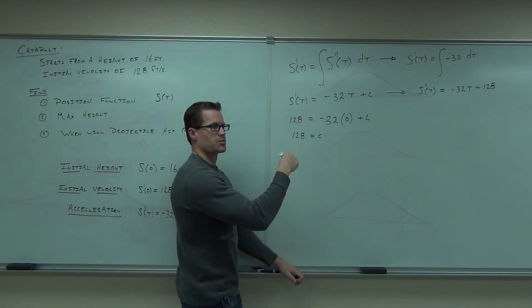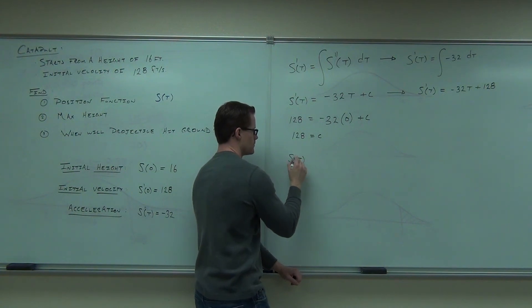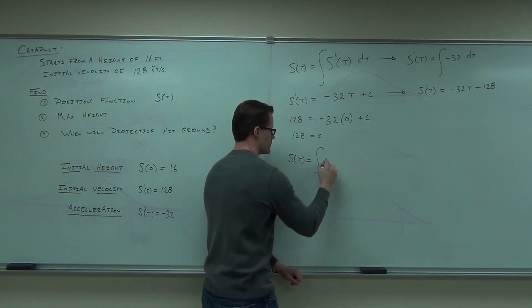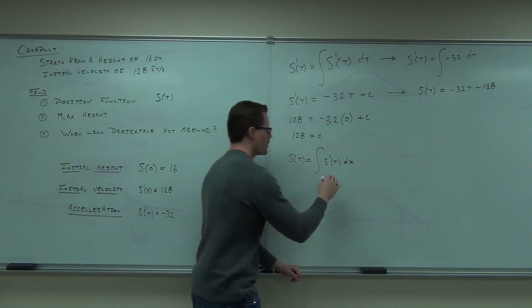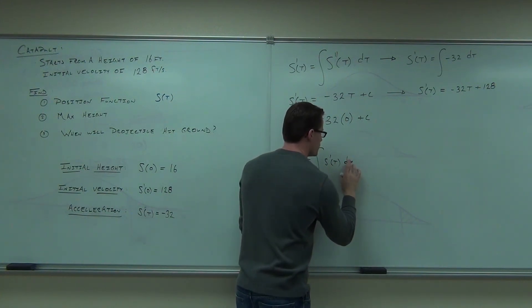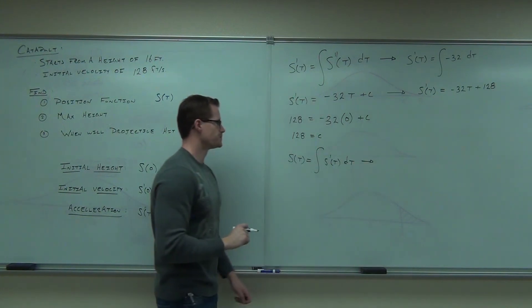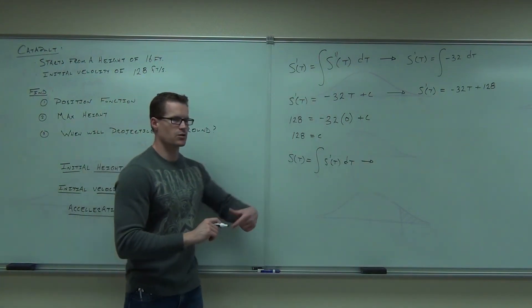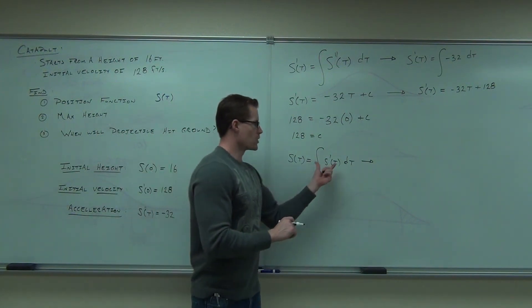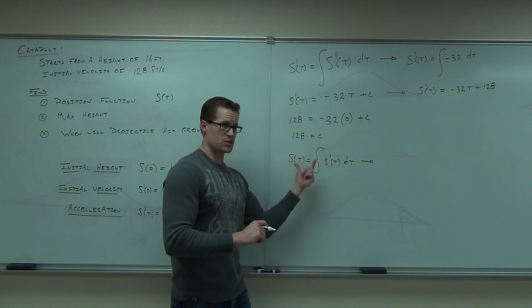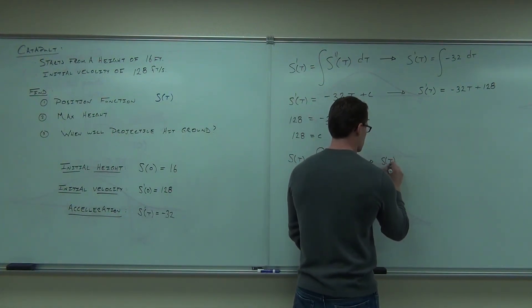Before we can actually find the maximum height, we need to figure out the position function. If we know S prime of T, there's a way to figure out S of T. S of T equals the integral of S prime of T — an integral will undo that derivative. So in order to go from our first derivative back to a position function, we take an integral of it.